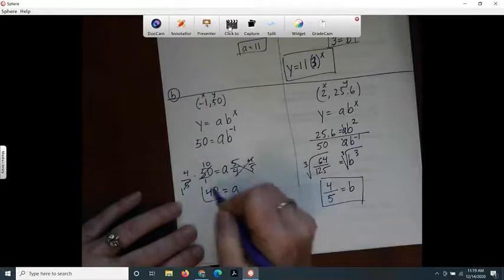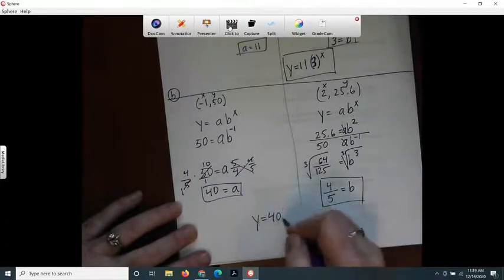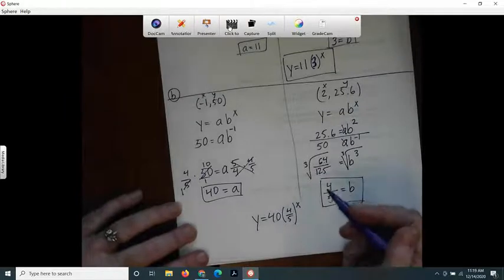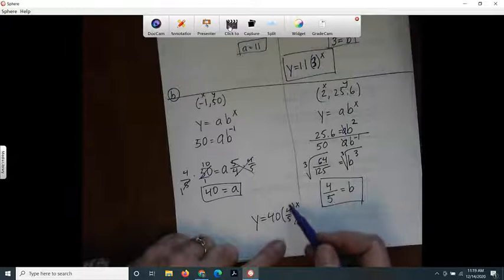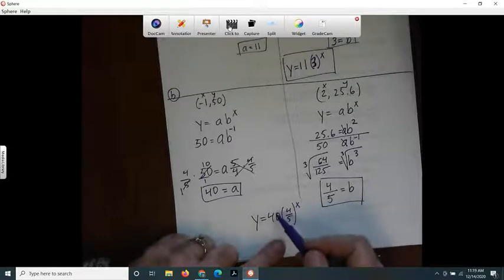So that gives me y equals a, which is 40, times b, which is 4 fifths to the x. Now some people get confused and they think that they can cross reduce these or something, but you can't because of order of operations. Because this fraction here is the base of this exponent. So you can't do anything with the 40 and the 4 fifths. So you're just stuck with it.